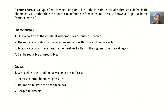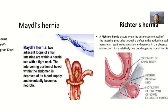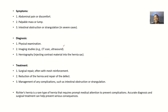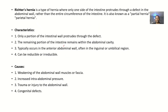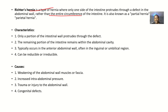We'll be talking about Richter's hernia — the definition, characteristics, possible causes, symptoms, diagnosis, and treatment. Richter's hernia is a type of hernia where only one side of the intestine protrudes through a defect in the abdominal wall, rather than the entire circumference of the intestine. It is also known as a partial hernia or parietal hernia.